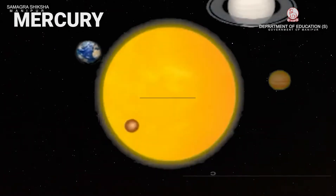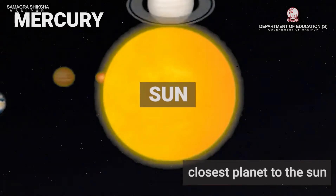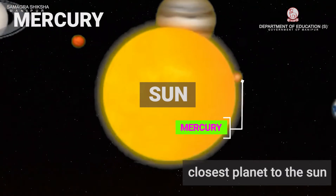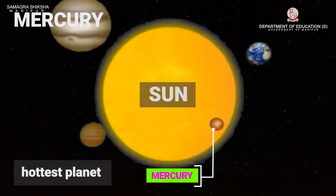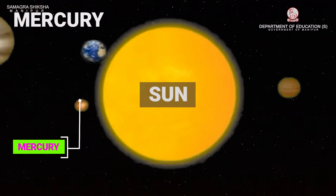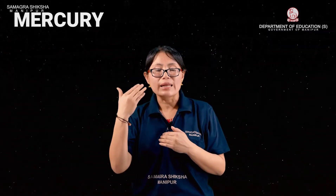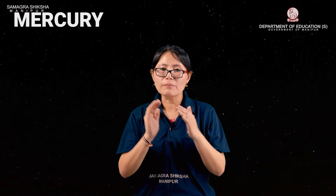The first planet is Mercury. Mercury is the closest planet to the sun. It is also the smallest planet. The sun appears very hot and very large from Mercury. Mercury can be seen just before sunrise. It has no satellite. What is a satellite? A satellite is a celestial object that revolves around another object.